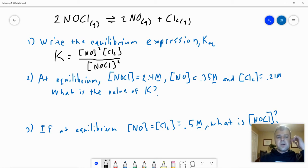Then another problem says at equilibrium the concentration of NOCl is 2.4 molar, NO is 0.35 molar, and Cl2 is 0.21 molar. What's the value of K? Well now we take our expression and we just plug in the numbers. Nitrogen monoxide is 0.35, so we take 0.35 squared times 0.21 divided by 2.4 squared.